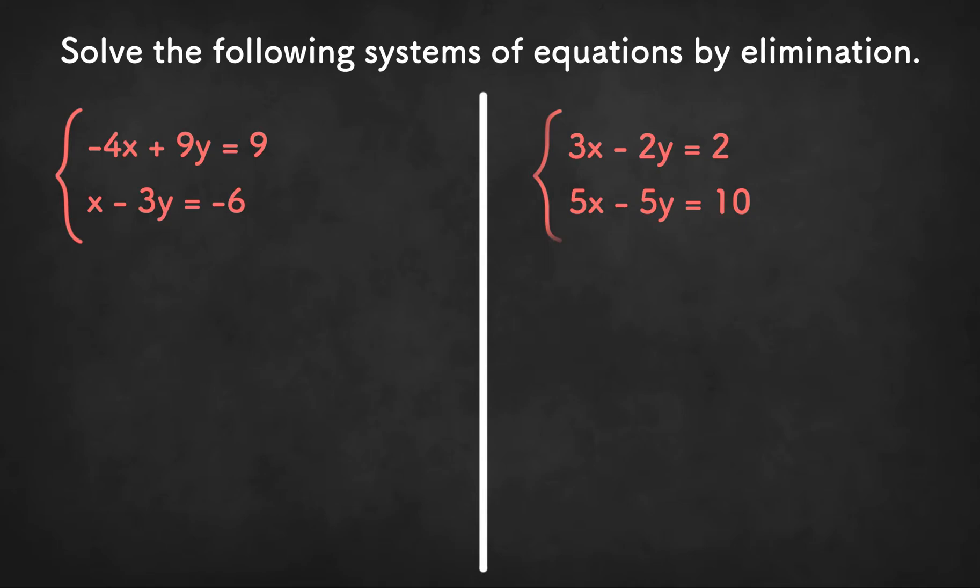So in the previous video, we talked about when the coefficients of one variable are opposites or identical, and we can add the equations or we can subtract the equations to make one of the variables drop out.